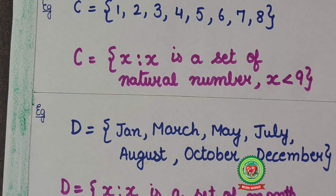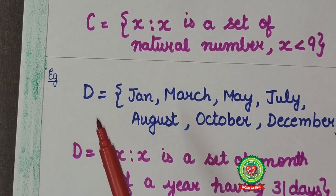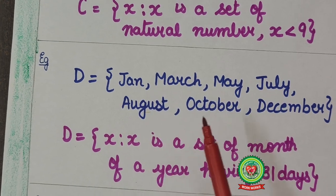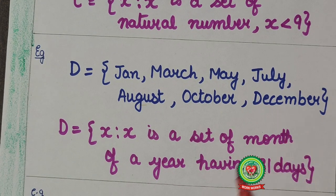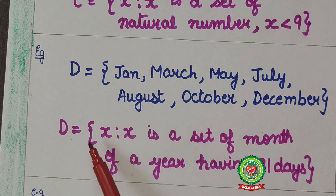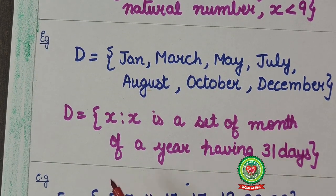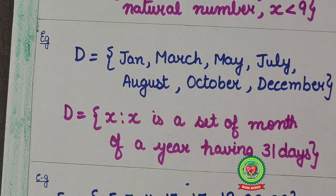Here D is January, March, May, July, August, October, December. Now which common property you are able to see over here? That these are the months of the year and all are having 31 days. So how I will write in set builder form: capital D equals x such that x is a set of month of a year having 31 days.